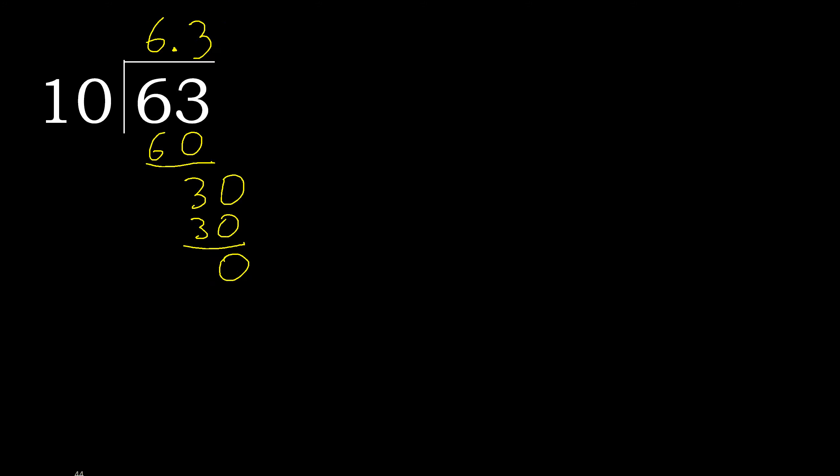30. 10 multiplied by 3 is 30, is not greater. 30 minus 30 is 0. Therefore finish it — 63 divided by 10 is here.